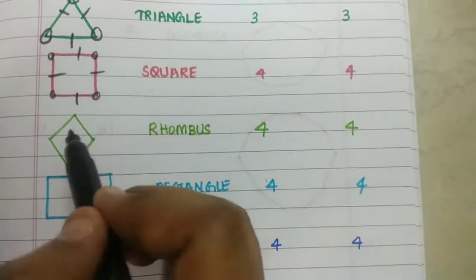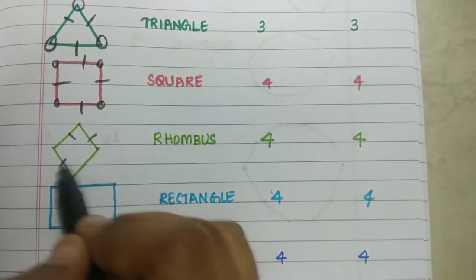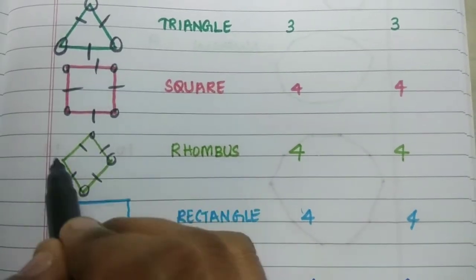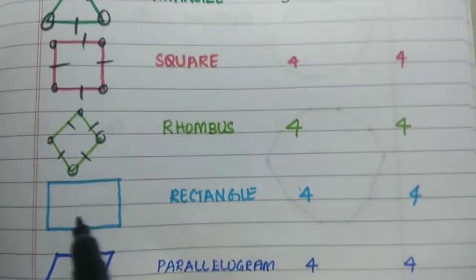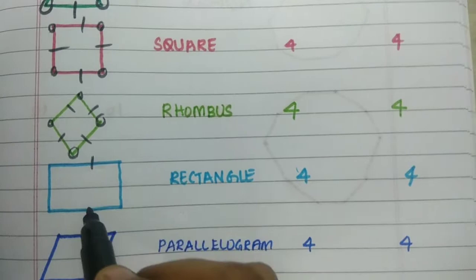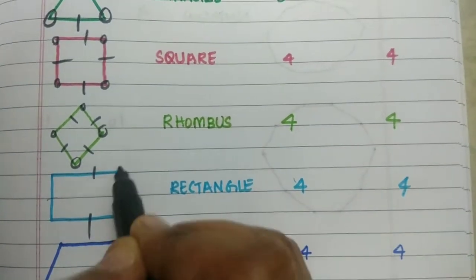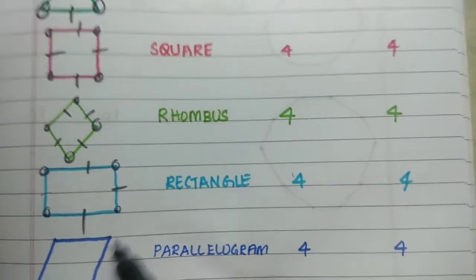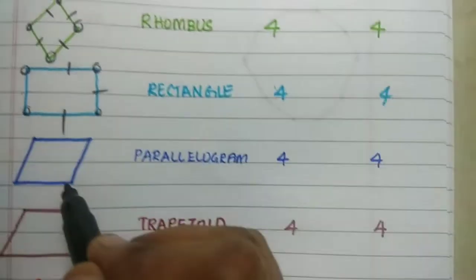A rhombus has four sides and four vertices. A rectangle has four sides and four vertices.